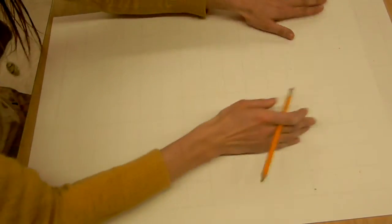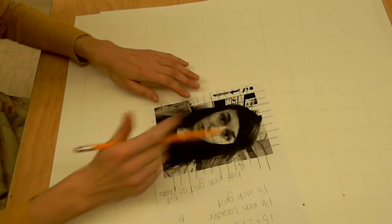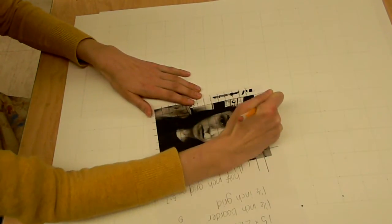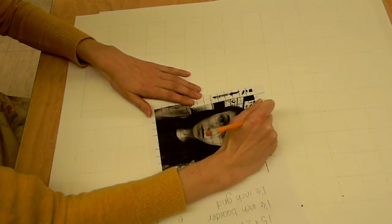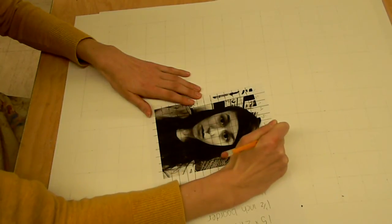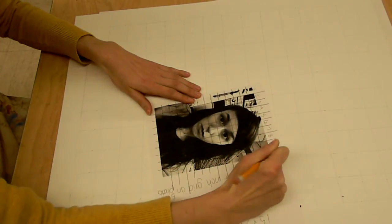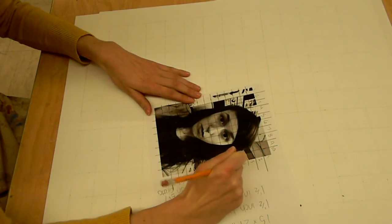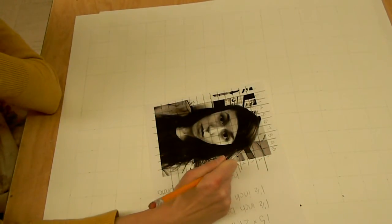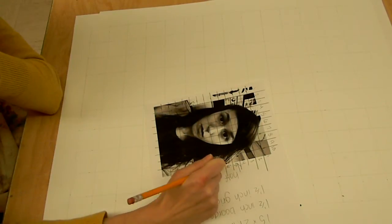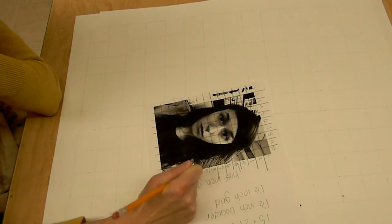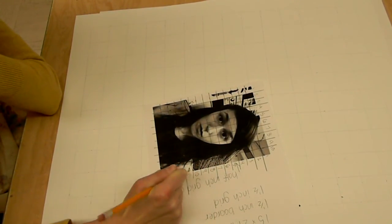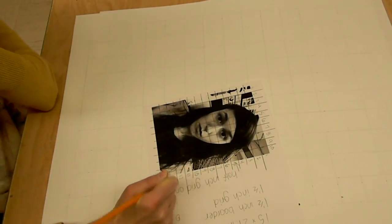Some people find it helpful to number your squares—1, 2, 3, 4, 5, 6, 7, 8, 9, and 10—then labeling down the other way. If you feel like you don't need to do this and just want to match up your squares as you go, you're more than welcome to.